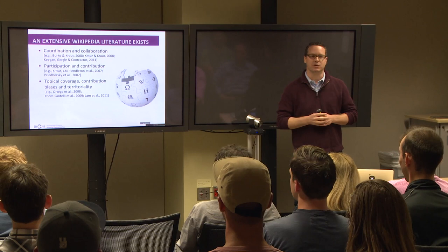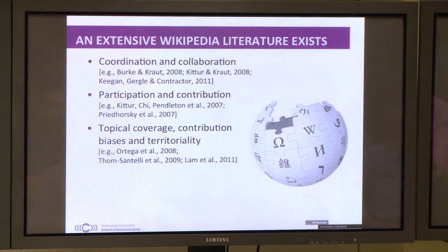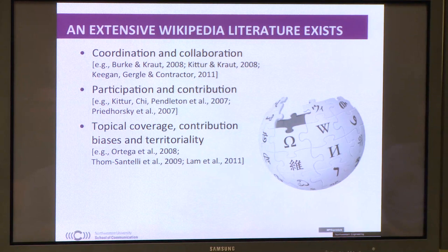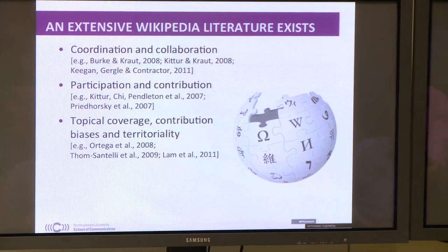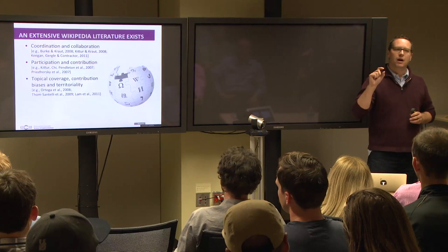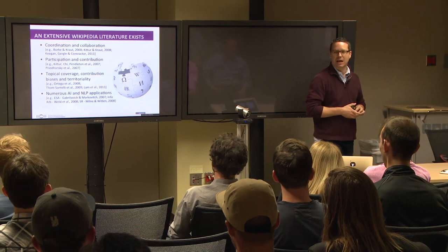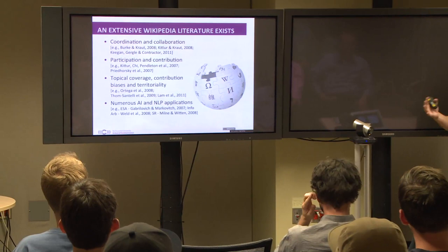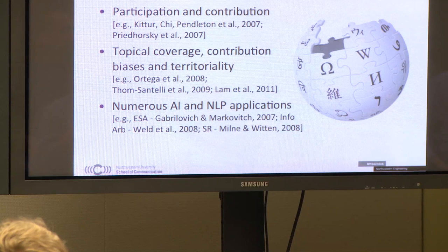As a result of its prominence, Wikipedia has been investigated by a lot of different researchers. They've looked at things like coordination and collaboration processes in these environments, how to get people to participate and contribute to Wikipedia, how to maintain that community over time, and studies that look at the information as an artifact — things like topical coverage and biases. It's primarily white males from age 20 to 30 putting in the content, and Wikipedia has also become really important as the brains of a lot of AI and natural language processing algorithms.